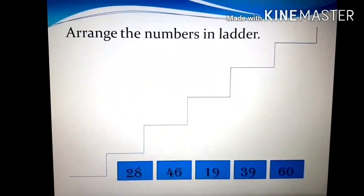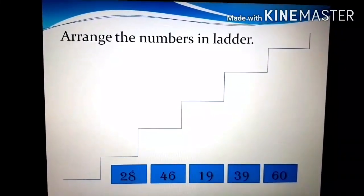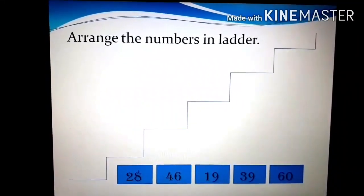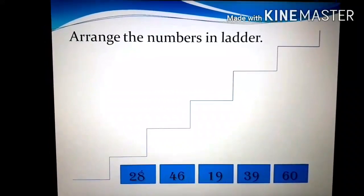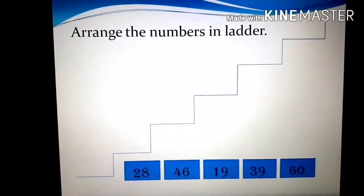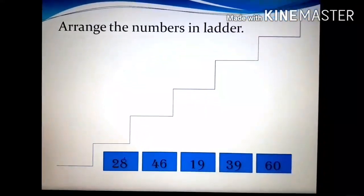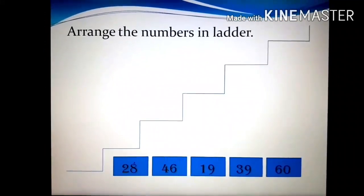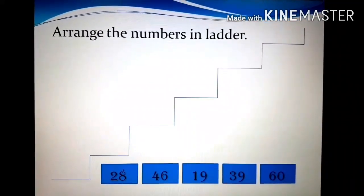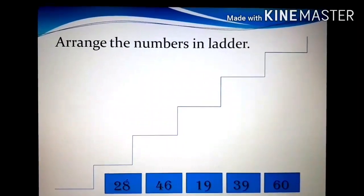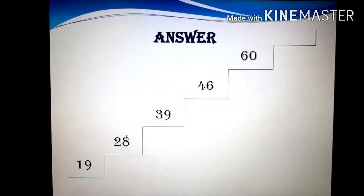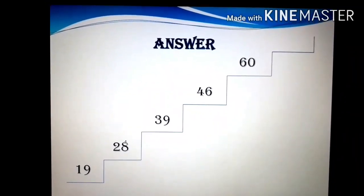Now we will see some examples. If I want to climb a ladder, I will climb from bottom to top. So from bottom to top, I will go from smallest to biggest. See here, the numbers are 28, 46, 19, 39, 60. So if I want to climb a ladder, I will go from bottom to top, means from smallest to biggest number. I will keep the numbers from smallest to biggest number in the ladder. The answer is 19, 28, 39, 46 and 60.